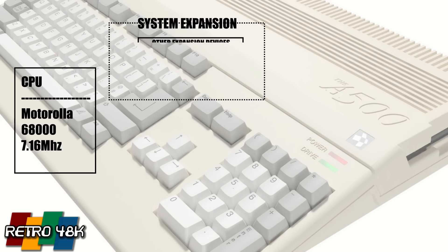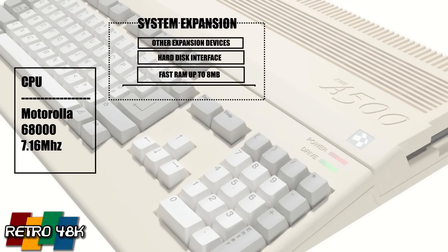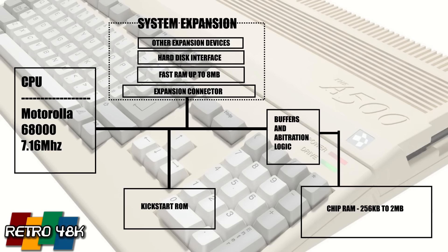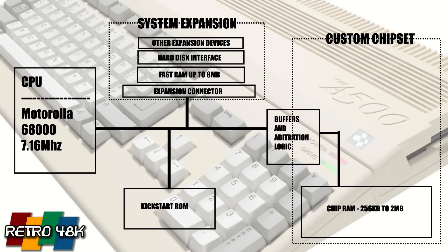Thanks to its home computer nature, there was a series of expansions that could be attached to the Amiga, such as a hard disk interface, fast RAM, and various other expansion devices connected through an expansion connector. All of this was linked together through a series of buses and buffers through to the Amiga's Kickstart ROM. The RAM could range from 256 kilobytes up to 2MB of what the Amiga calls chip memory, and general fast RAM was expandable up to 8MB via the expansion slot.